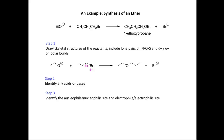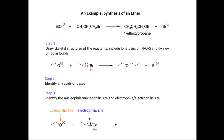In step three, crucially, we identify the nucleophile and nucleophilic site, the electrophile, and the electrophilic site. The ethoxide ion is the nucleophile — the electron-rich site. The 1-bromopropane is the electrophile; specifically the delta plus carbon is the electrophilic site in the reaction.